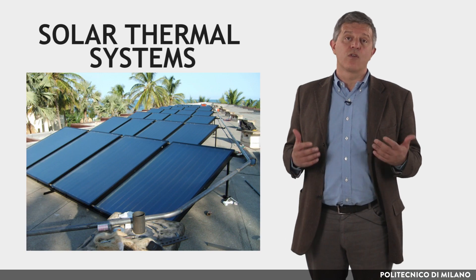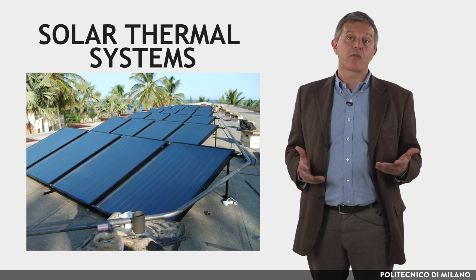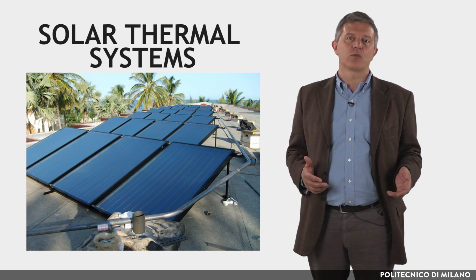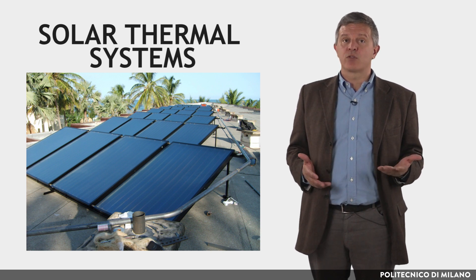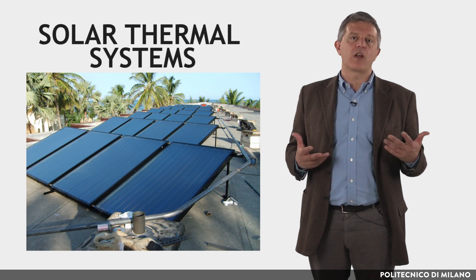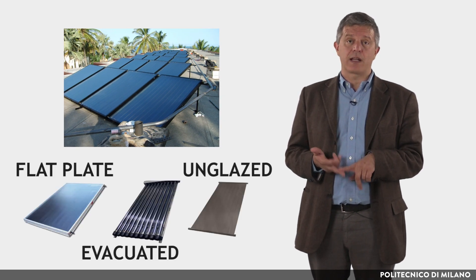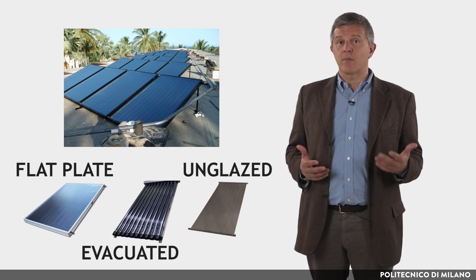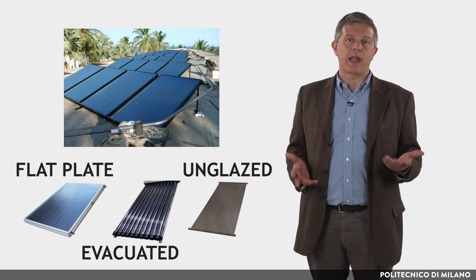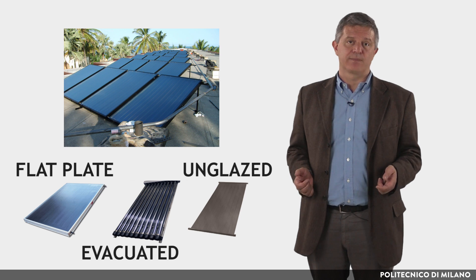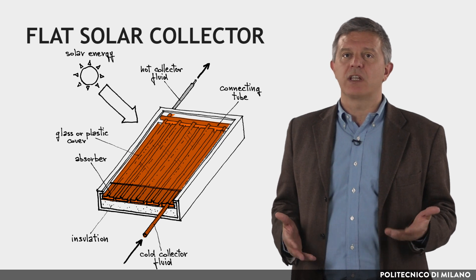Solar thermal systems convert solar radiation directly into heat. Their use is compatible with all applications that require thermal energy at a relatively low temperature, such as the production of hot water but also air conditioning. Solar energy is captured and converted into thermal energy through solar collectors. The market offers three types of products: flat plate, evacuated and unglazed solar collectors. The choice of the most suitable technology depends on the final use, mainly on the temperature they should work at and on the mean external weather conditions. Flat collectors are quite simple — for example, an absorbing plate integrated with pipes for the heat transfer fluid.